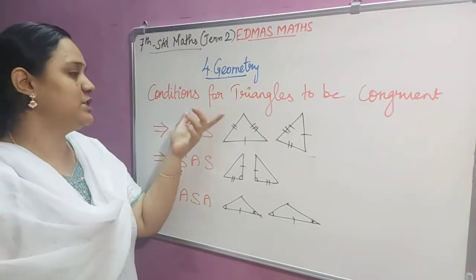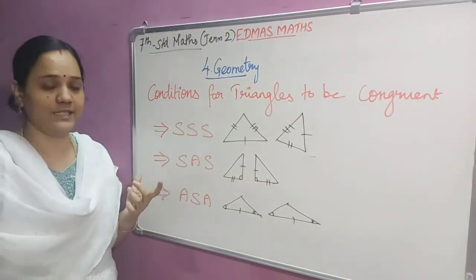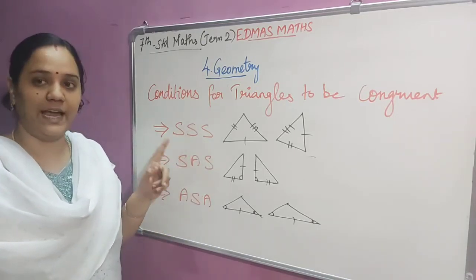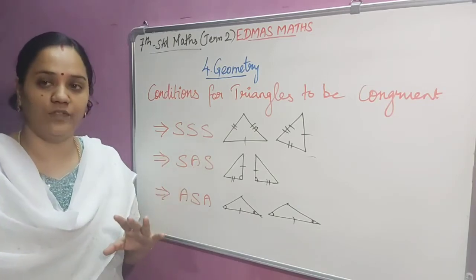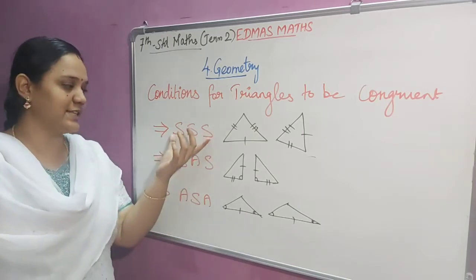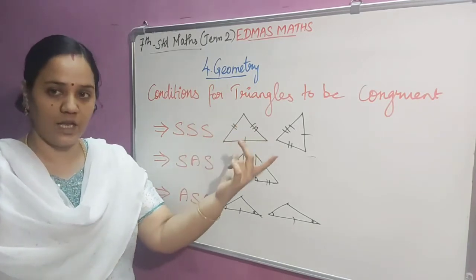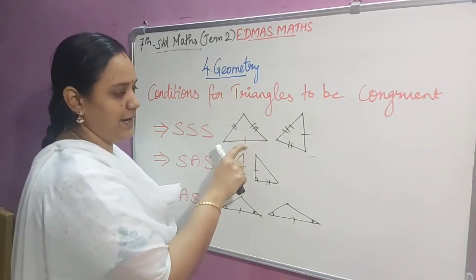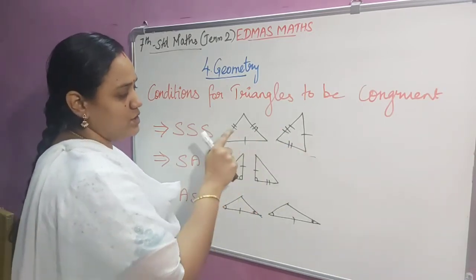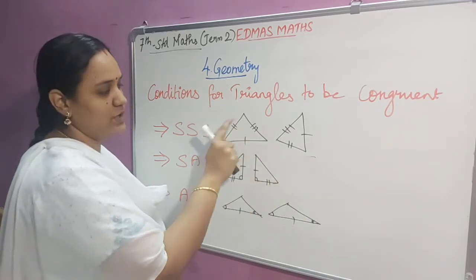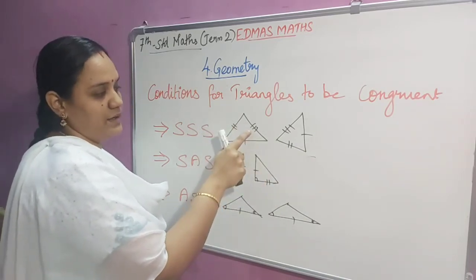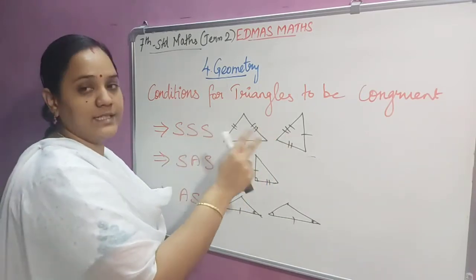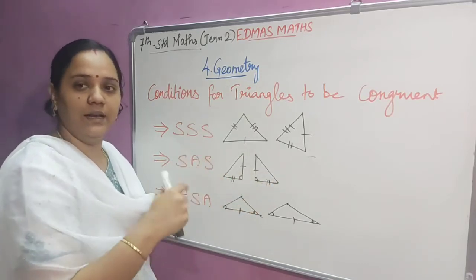The next topic is conditions for triangles to be congruent. There are three conditions: SSS, SAS, and ASA. The letter S represents a side of a triangle and A represents an angle. For SSS, if the corresponding three sides of two triangles are equal — shown here with single, double, and triple tick marks — then we can say the two triangles are congruent.